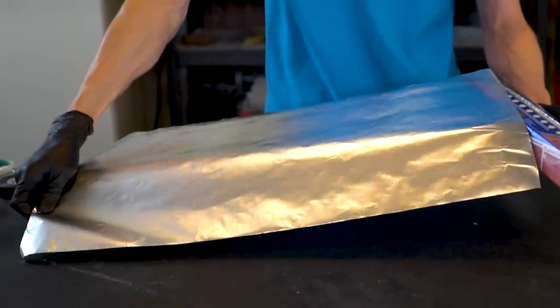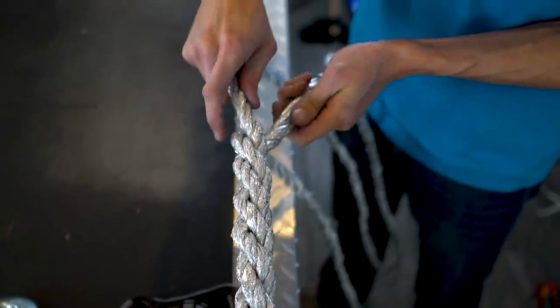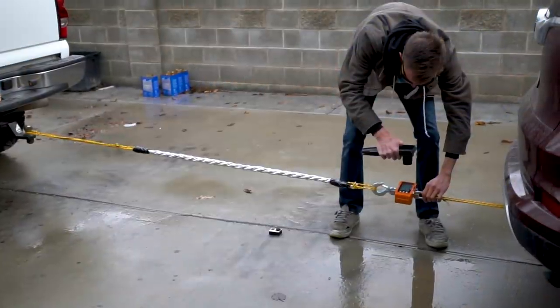In today's video, we're taking really thin sheets of aluminum and seeing if we can twist them into something stronger, a metal rope.